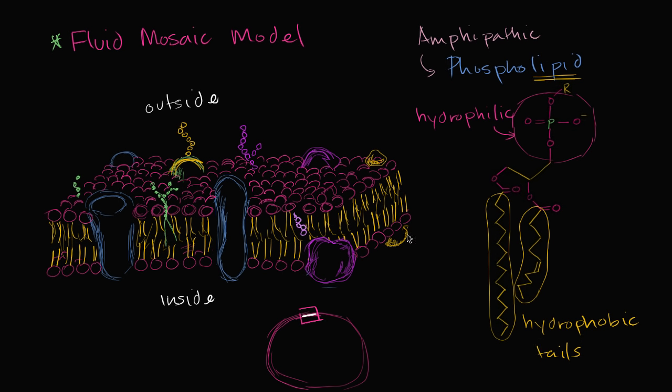And hopefully that starts to explain why they organize themselves in this way. Because you can imagine, the hydrophilic heads are going to want to be where the water is, which is going to be either outside the cell or inside the cells. And the tails are hydrophobic. The water's going to go away from them, or they're going to go away from the water, and so they're just going to face each other, and they're going to be on the inside of the membrane.